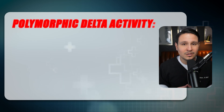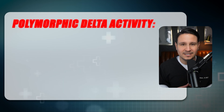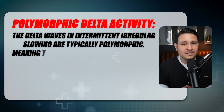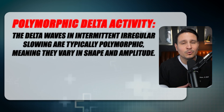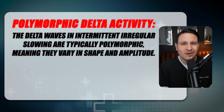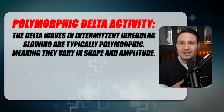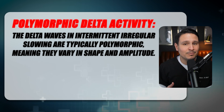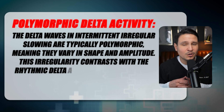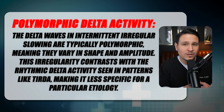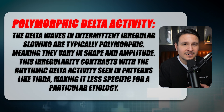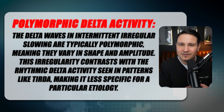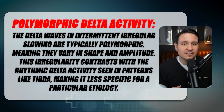Number two: polymorphic delta activity. The delta waves in intermittent irregular slowing are typically polymorphic, meaning they vary in shape and amplitude. This irregularity contrasts with the rhythmic delta activity seen in patterns like TURDA, making it less specific for a particular etiology.